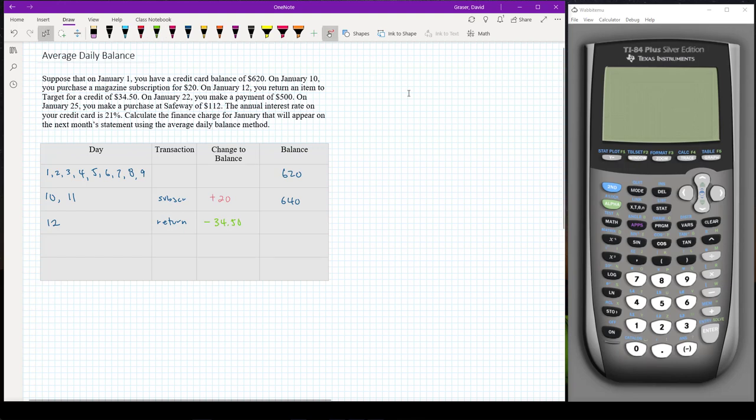So I'm going to subtract 34.50. When I subtract 34.50, we have a balance of 640 and it's going to be reduced by the return by 34.50, so that gives my new balance of $605.50.